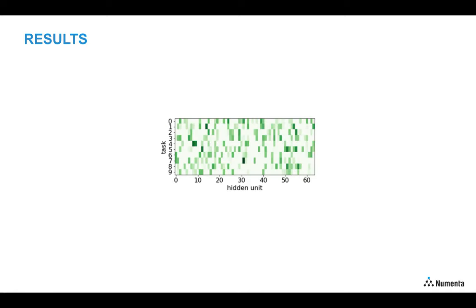An empirical analysis shows the hidden units in our active dendrite networks are being modulated by dendritic segments and different subpopulations of neurons become active for different tasks.